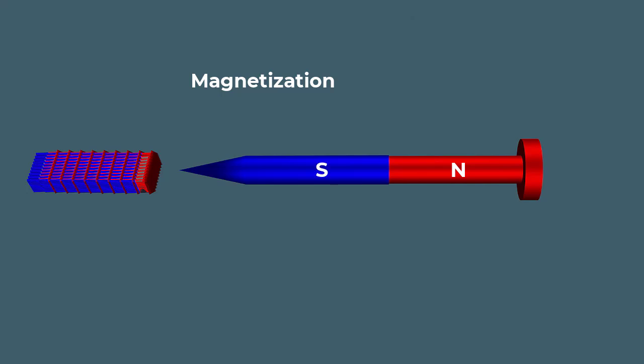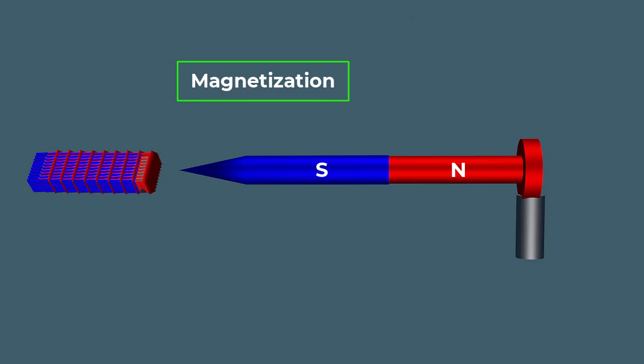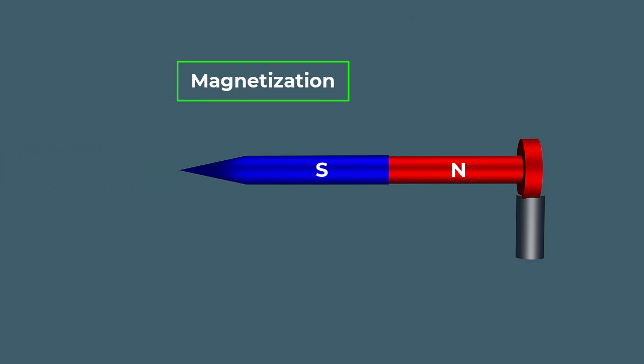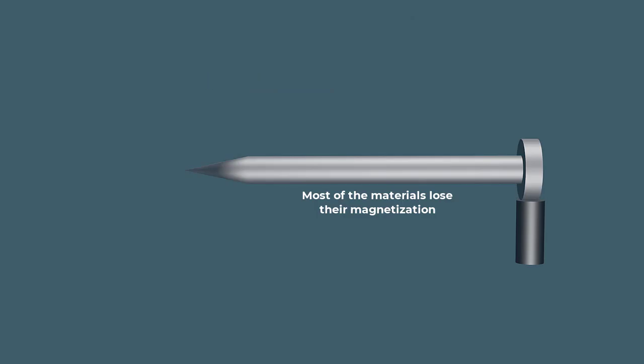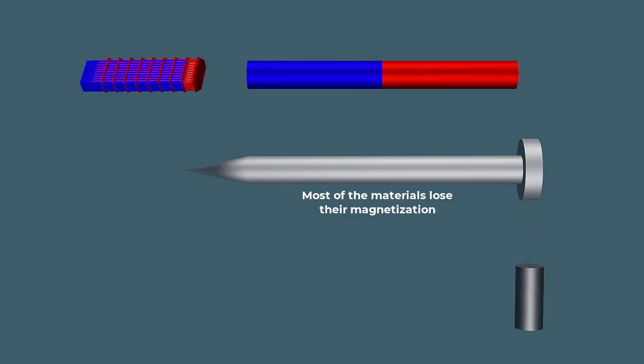One end of the material becomes the north pole while the other end becomes the south pole. In this way, a material becomes magnetized. The process by which a material becomes magnetized, acquiring magnetic properties, is called magnetization.